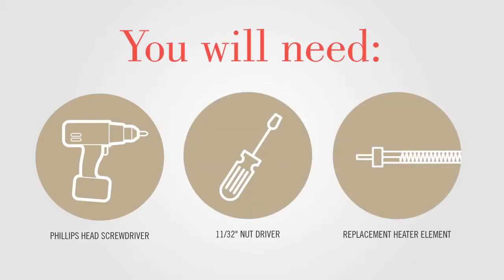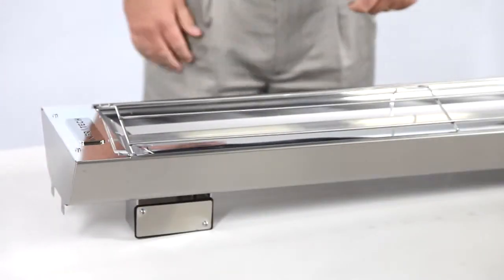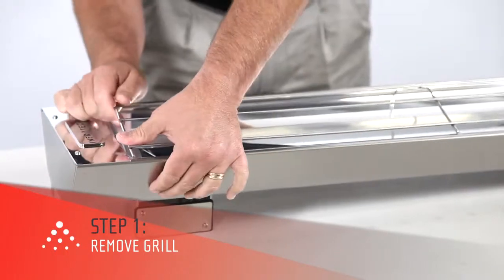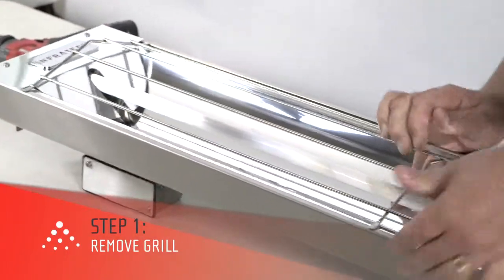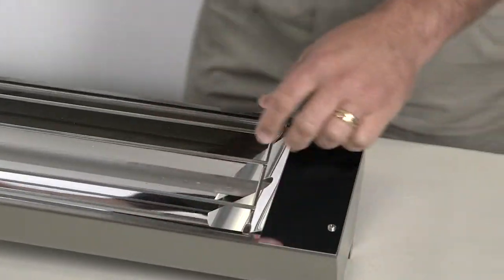Then you'll need to gather the right tools for installation. To get started, the first thing you'll need to do is remove the grill. To do this, lift it in the middle, flex it up, and slide the tabs out.